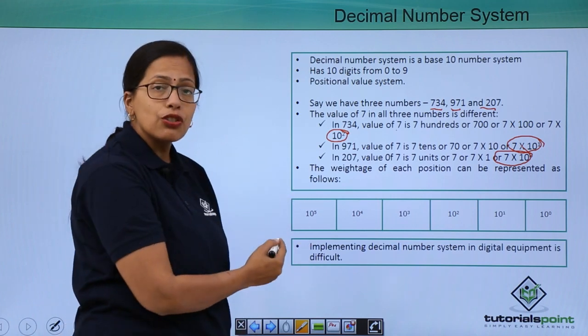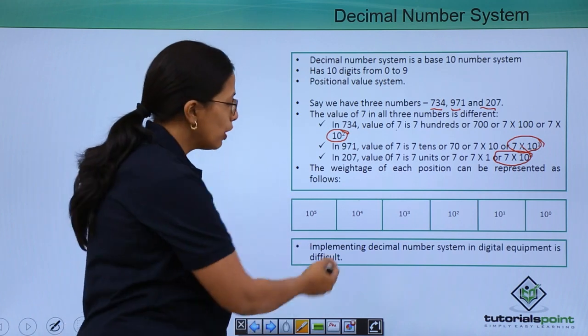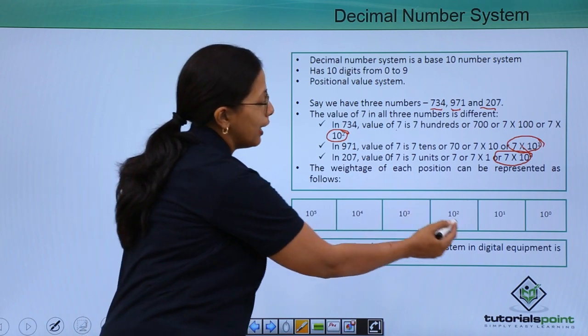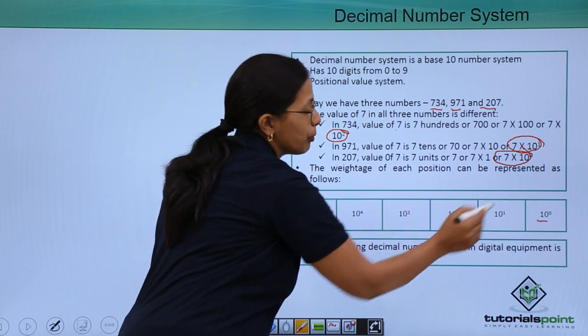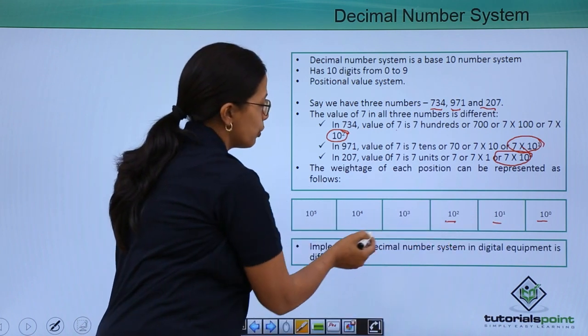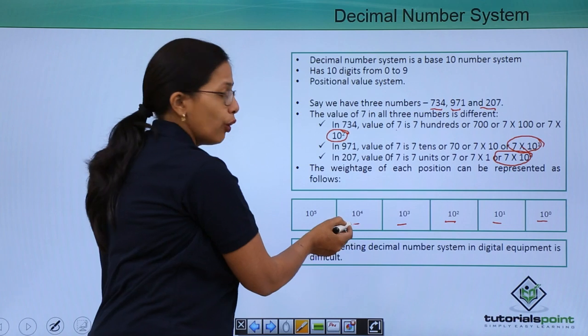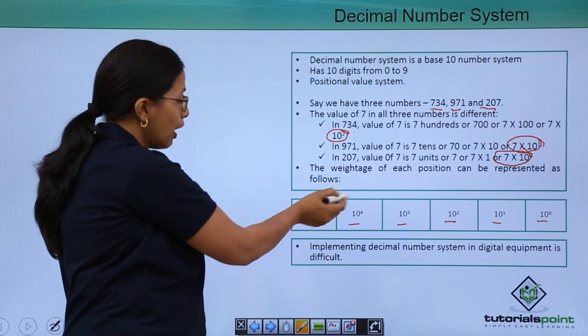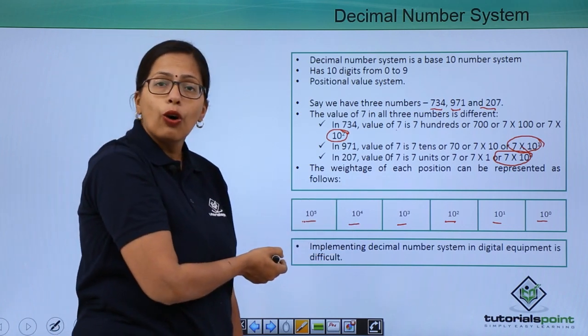Every position has got a weightage which we calculate like this. Starting from the right most, 10 to the power of 0, 10 to the power of 1, to the power of 2, to the power of 3, 4 or 5 and this will go on.